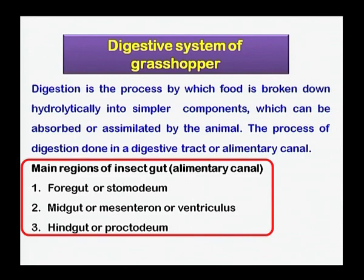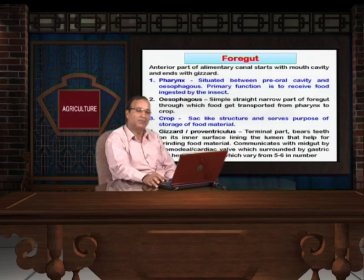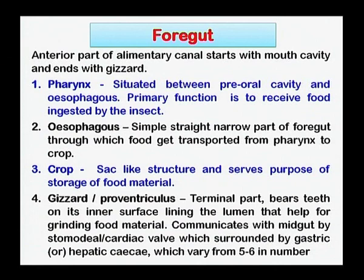The foregut is the anterior-most part of the alimentary canal. It starts from the mouth cavity and ends with the gizzard. The foregut consists of four parts: first is pharynx, second is esophagus, third is crop, and fourth is gizzard.